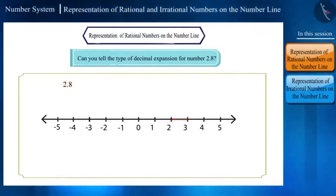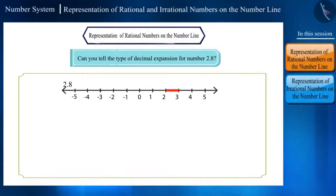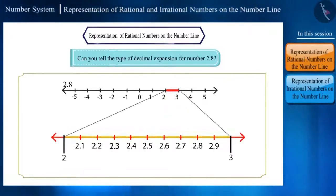The number 2.8 will lie between the numbers 2 and 3. Now we will divide the portion between numbers 2 and 3 into 10 equal parts like this. Friends, why 10 equal parts? Because this will make the process of locating the number easy.